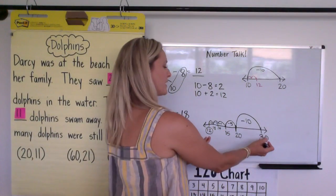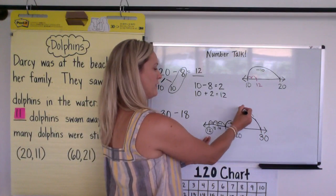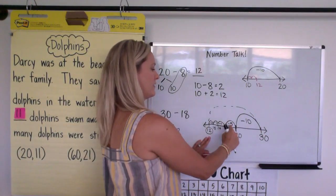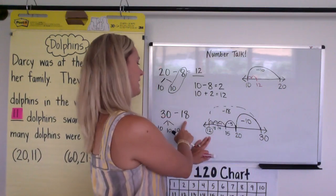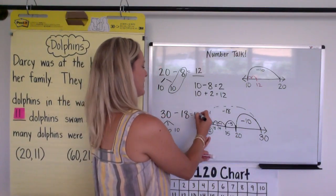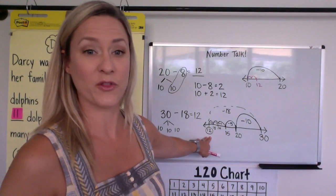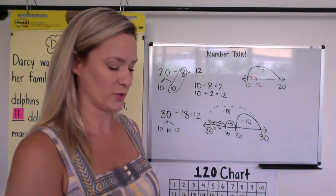We know that because we started at 30 and we took off 10, 15, 16, 17, 18. So all together we took off 18 and we landed at 12. So those are a couple of ways your kids may approach it.